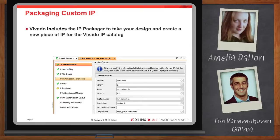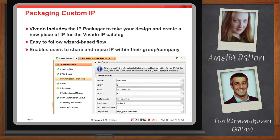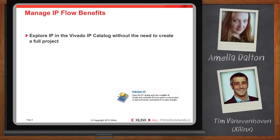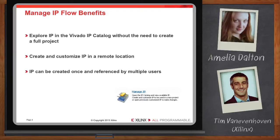The IP packager flow is how you can connect your own custom IP to the Vivado IP catalog. The Vivado IP catalog is based on the industry standard IP-XACT, but you're not required to learn anything about the standard. The IP packager is a wizard-like flow that automatically creates the necessary files according to the IP-XACT standard to enable a custom IP to show up in the IP catalog and be used in Vivado. One of our most popular flows is called the Manage IP Flow. It provides a number of ease-of-use benefits to designers, allowing you to explore the Vivado IP catalog without the need to create a full project. It supports creating and customizing IP in a remote location and enables an IP to be created once and referenced by multiple users.